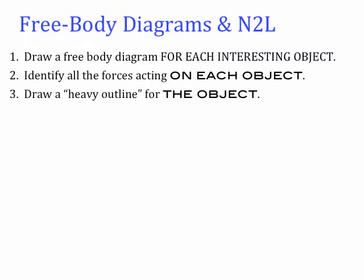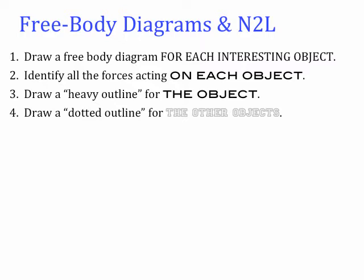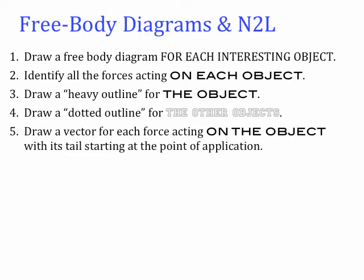Go ahead and draw a heavy outline for the object of interest. You're going to need a free body diagram for each interesting object. Let's say we pick object 1 — we're going to draw it in a heavy outline. For that free body diagram, you're going to draw a dotted outline for the other objects that aren't the focus but are still interacting with it. You're going to draw a vector for each force acting on the object, with its tail starting at the point of application. Additionally, indicate on the vector the source of the force — the thing that's causing the force — in addition to an identifier for the object upon which the force is acting.